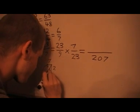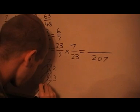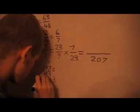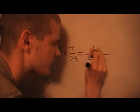One hundred, forty-eight, twenty-eight, one hundred sixty-one. So I've got 161 over 207.